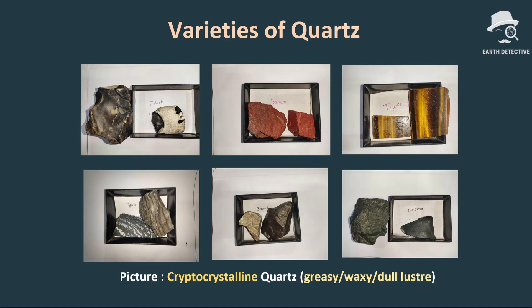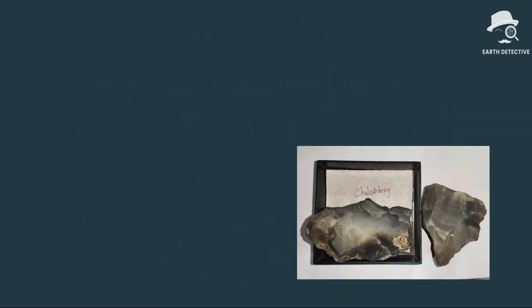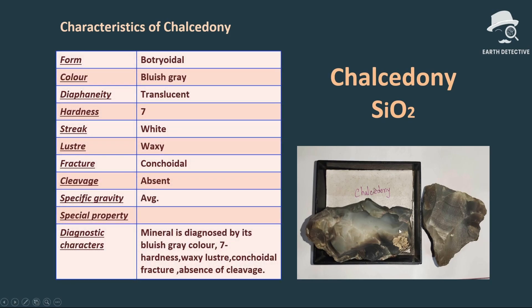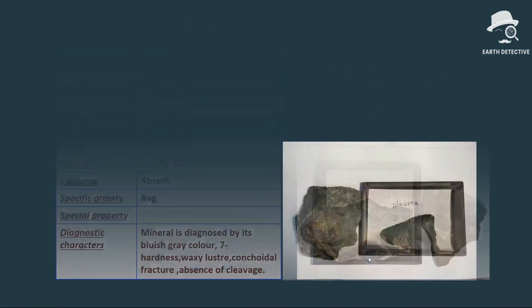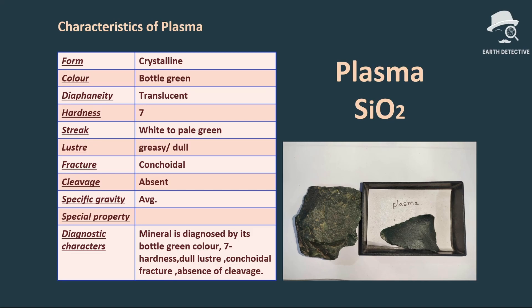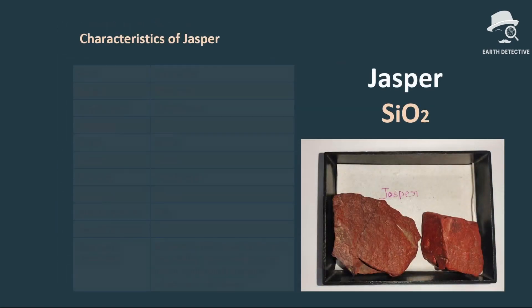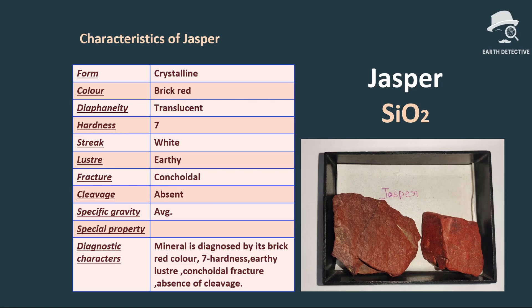Now we study cryptocrystalline quartz. The crystals are so tiny they form a dense, uniform mass with greasy, waxy, or dull luster. Chalcedony is diagnosed by its bluish-gray color, botryoidal form, translucent diaphaneity, hardness seven, waxy luster, conchoidal fracture, and absence of cleavage. Plasma can be identified by its bottle green color, hardness seven, dull luster, translucent diaphaneity, white to pale green streak, conchoidal fracture, and no cleavage.